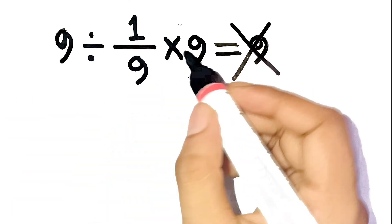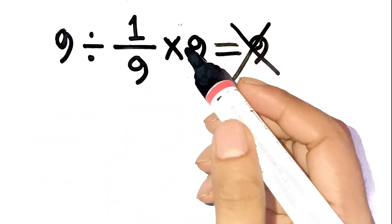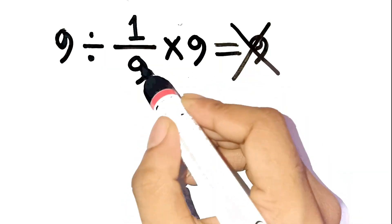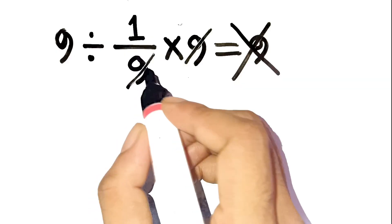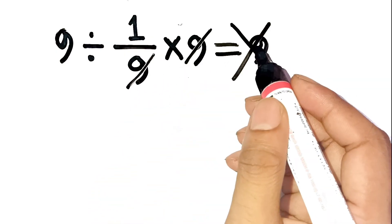You probably looked at 9 divided by 1 ninth times 9 and thought, okay, the 9 under 1 and the 9 on the right kind of cancel. So we're left with 9 divided by 1, which is 9. Makes sense at first glance, right?